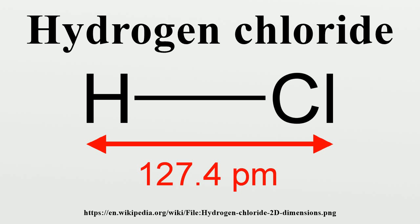Hydrochloric acid, the aqueous solution of hydrogen chloride, is also commonly given the formula HCl. Hydrogen chloride is a diatomic molecule, consisting of a hydrogen atom H and a chlorine atom Cl connected by a covalent single bond.